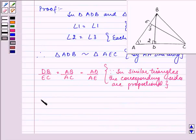So now, taking this, we can write that AB upon AC is equal to AD upon AE. We have taken these two groups.